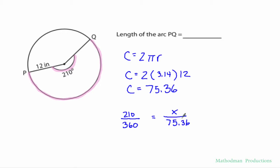Now I have a proportion cross multiplying problem. And I can solve this by doing 360 times x. 360x equals 210 times 75.36. That gives me 15,825.6. Divide both sides by 360. And I get 43.96, which is the length of my arc.